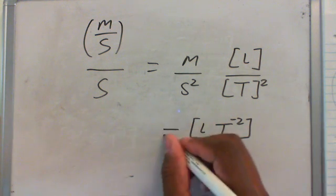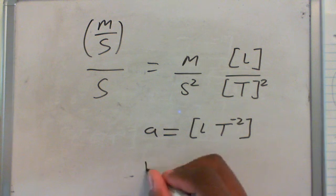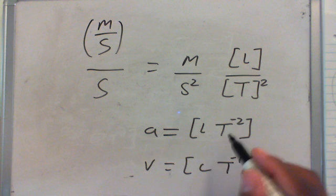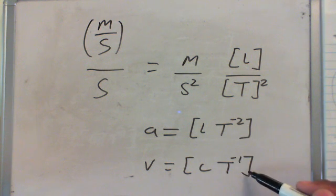So this is a for acceleration, and this is v, velocity. These are the units for acceleration and velocity.